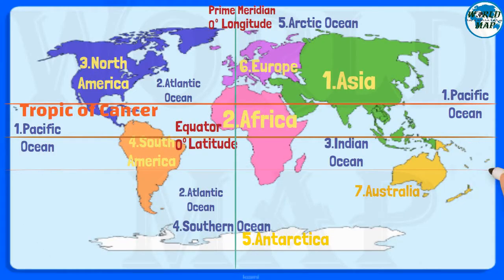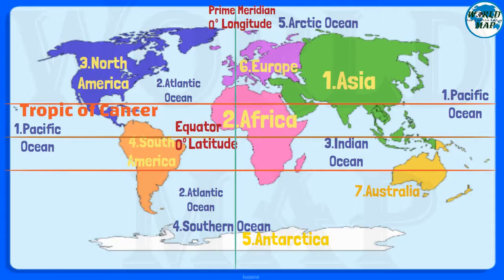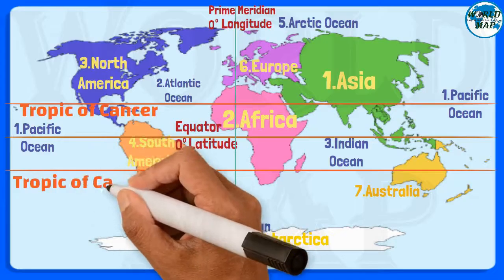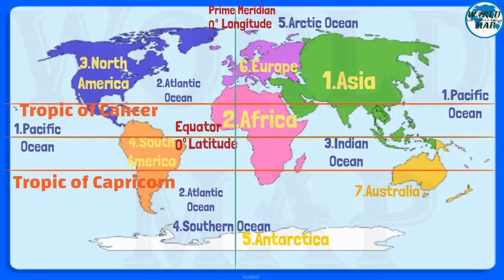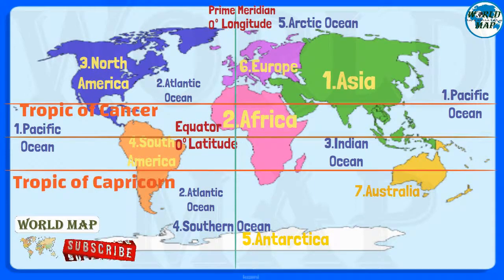The Tropic of Capricorn is the circle of latitude that contains the sub-solar point at the December solstice. It is thus the southernmost latitude where the Sun can be seen directly overhead. It also reaches 90 degrees below the horizon at solar midnight on the June solstice.